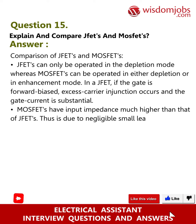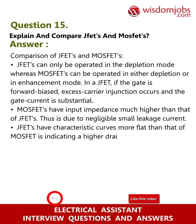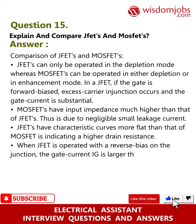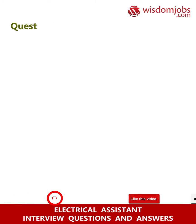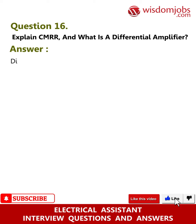This is due to negligible small leakage current. JFETs have characteristic curves more flat than that of MOSFETs, indicating a higher drain resistance. When a JFET is operated with a reverse bias on the junction, the gate current is larger than it would be in a comparable MOSFET.